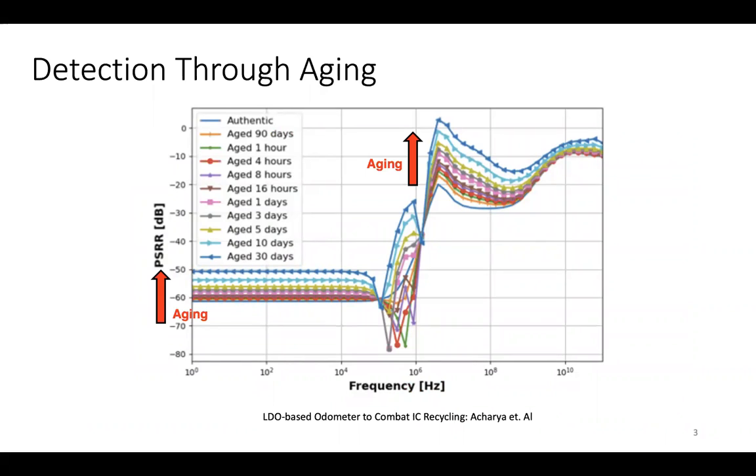One idea proposed by Robin, a Ph.D. student under Dr. Forte, is detection of counterfeit ICs through aging of transistors and measurements of PSRR, power supply rejection ratio. As shown in the figure, as devices get older, PSRR increases. This type of measurement can even detect devices when they've only been used for an hour.